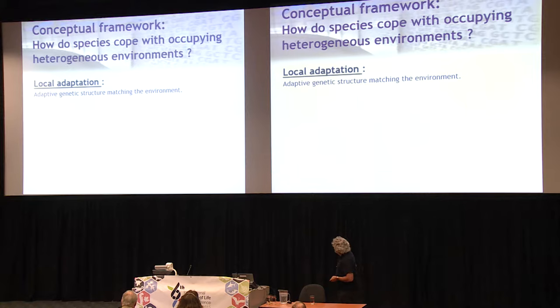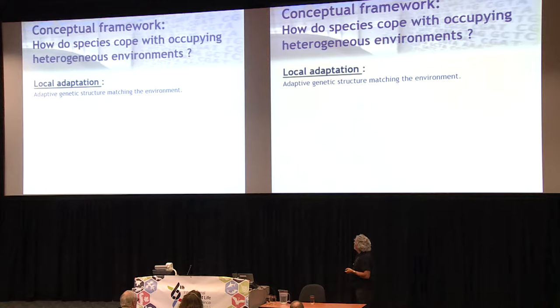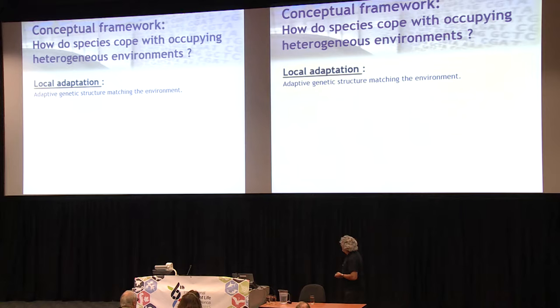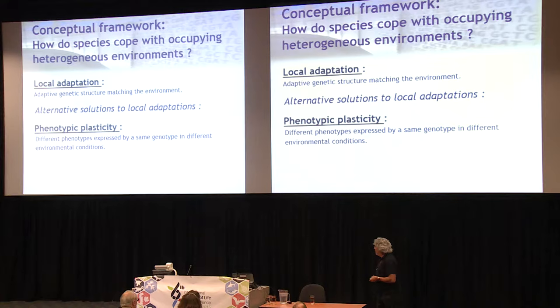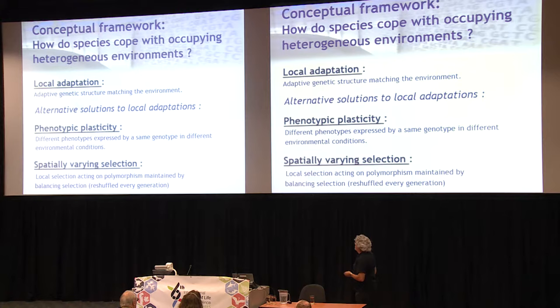The studies we're doing are framed in a conceptual framework around this basic question: how do species cope with occupying heterogeneous environments? There are various possible solutions. The first that comes to mind is local adaptation, which is about adaptive genetic structure matching the environment. But there are alternatives — phenotypic plasticity, where different phenotypes are expressed by the same genotype in different environmental conditions. And a third one we don't think about often: spatially varying selection, where local selection acts on polymorphism maintained by balancing selection, and this is reshuffled every generation.